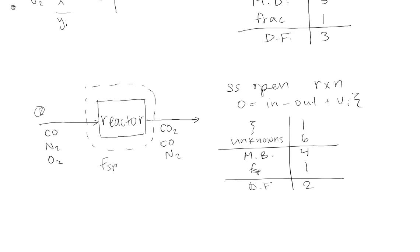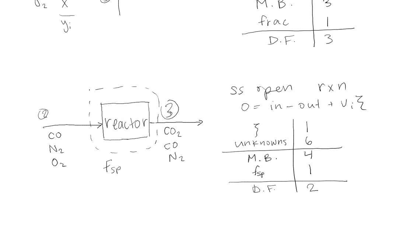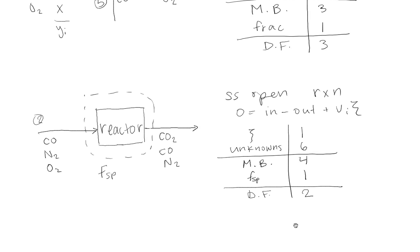All right. So for the reactor, even though we do have a degree of completion equal to 1 and you might think that that could count as an extra specification, we can't use it in our degree of freedom analysis because we've already taken it into account once by not writing O2 in stream 3. So because the degree of completion is 1 and O2 is a limiting reactant, it's completely used up and we've already used that piece of information by not including it here, so we can't count it again in the degree of freedom.